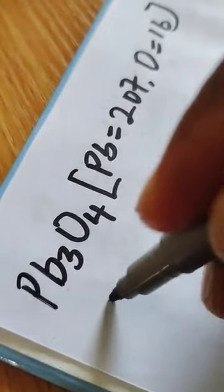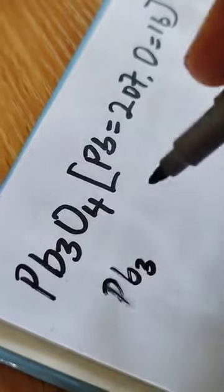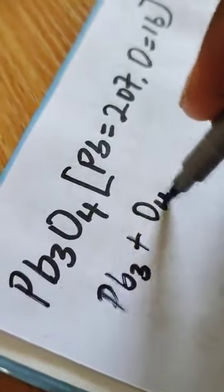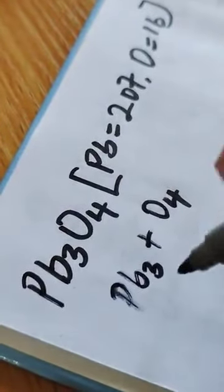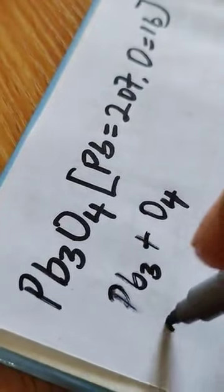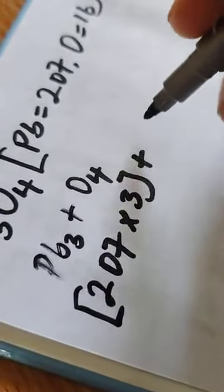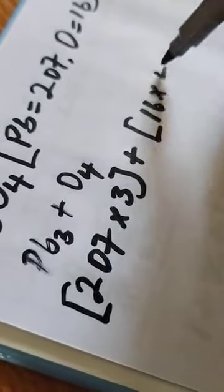So we have lead which is Pb3 plus O4. We know lead is 207. That will give us 207 times 3 in brackets plus 16 times 4.